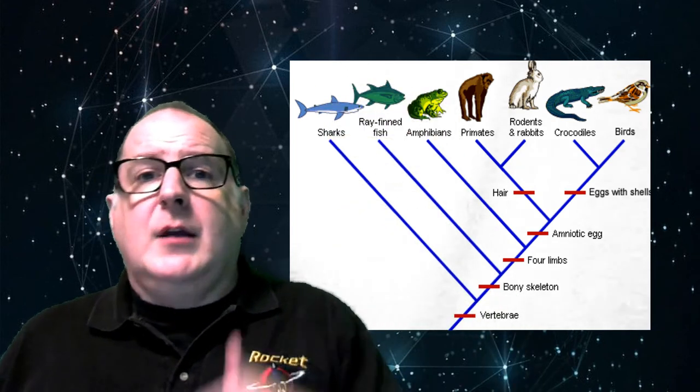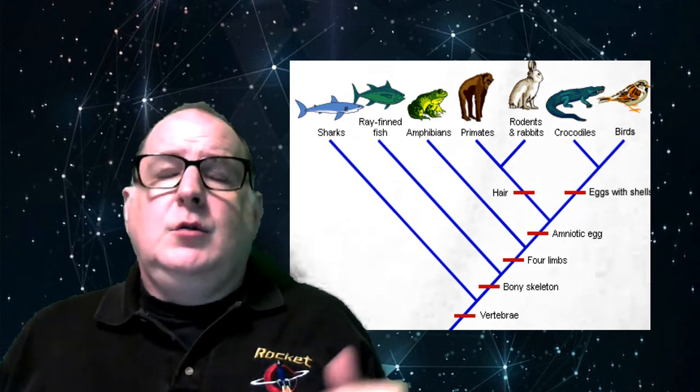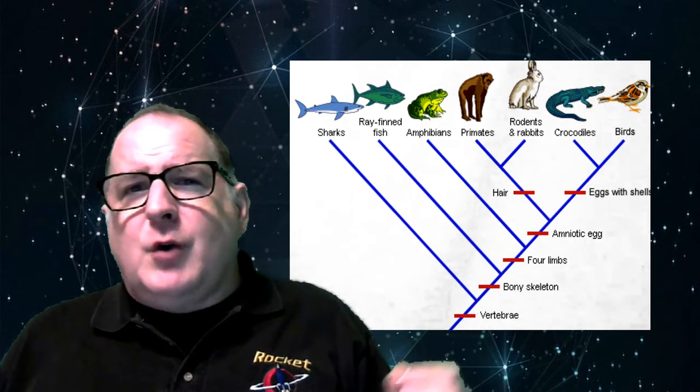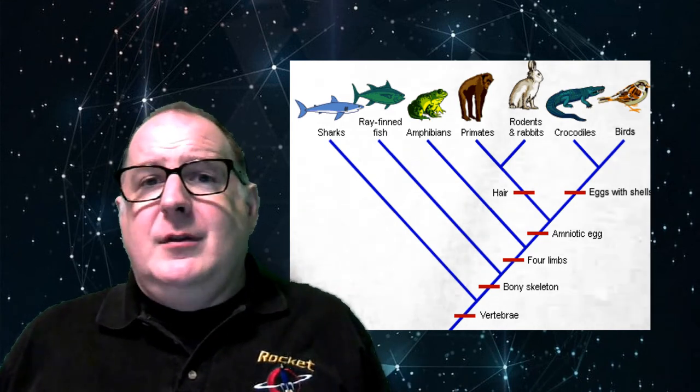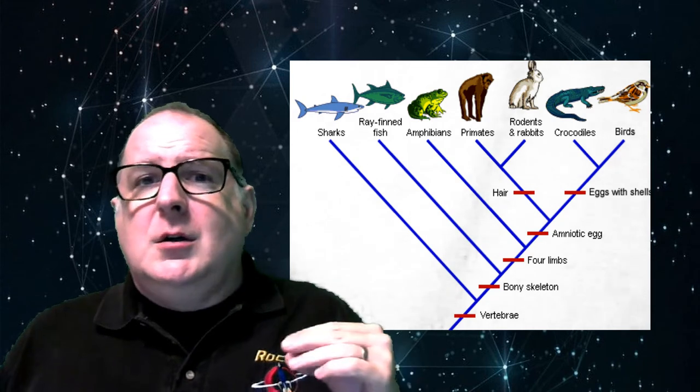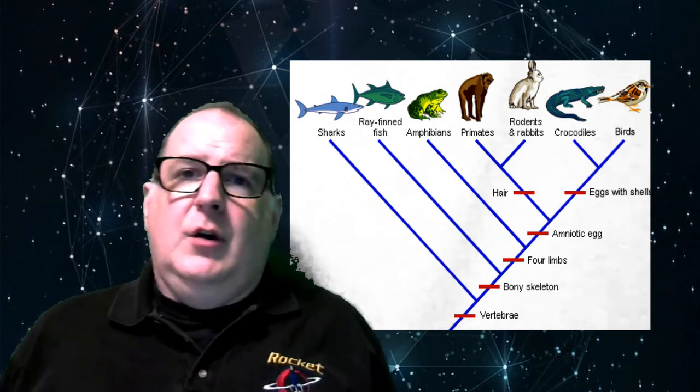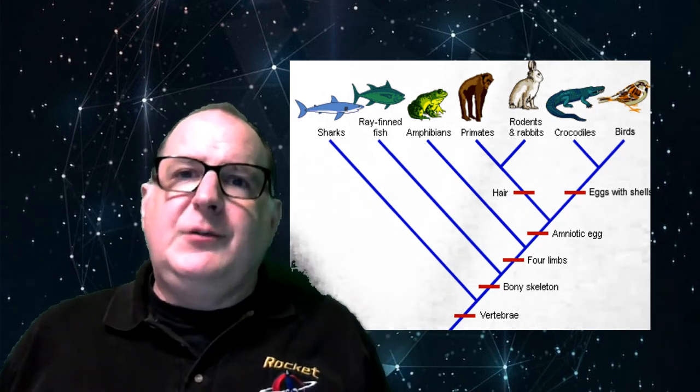Same thing for frogs. You go to the top, there's the frog. It isn't a frog all the way down that line to where they branched off. Those are ancestors of frogs, previous species.